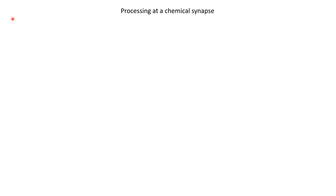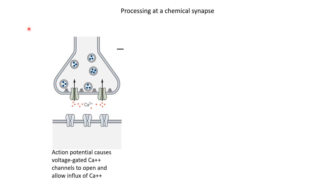Let us look at the processing at a chemical synapse in more detail. Action potentials are important because they allow release of neurotransmitters. The main link between action potentials and release of neurotransmitters are calcium ions. There is a high density of voltage-gated calcium channels present at the axon terminals. When an action potential arrives, it raises the membrane potential, which causes these voltage-gated calcium channels to open and calcium ions flow into the cell. Calcium ions are more abundant outside compared to inside, and because the inside is negative, both the chemical and electrical gradients drive calcium ions from outside to inside.